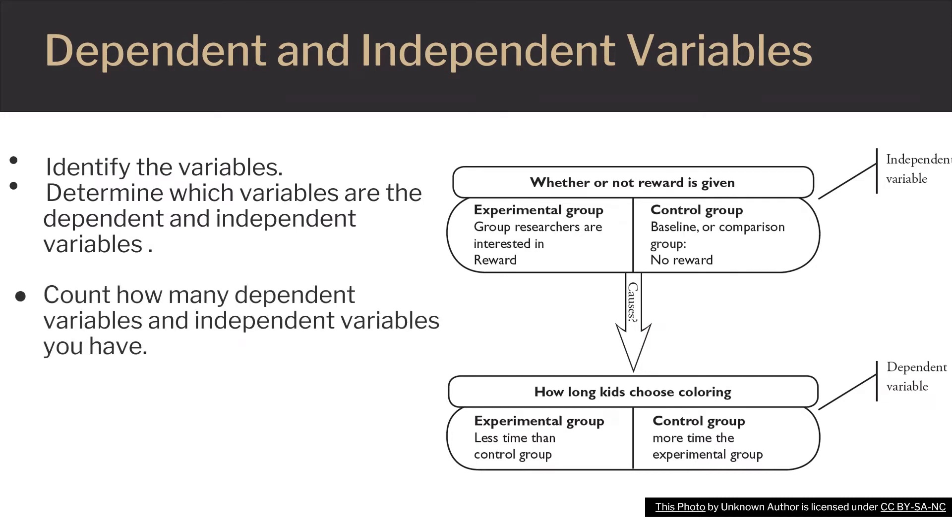An example of a study containing one dependent and one independent variable would be studying the effects of steroid use on sperm count. Here we're testing the effects of steroid use on how it impacts the quantity of sperm. The steroid usage would be the independent variable and the sperm count would be the dependent variable.